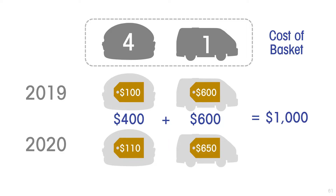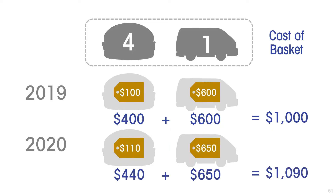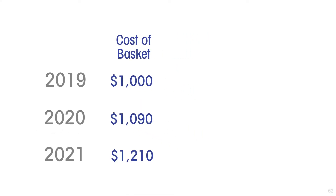But by 2020, prices changed. Food went up by 10% to $110 and transportation went up to $650, so the cost of purchasing that same basket in 2020 went up to $1,090. And we also have information for 2021, where the cost of the basket was $1,210.